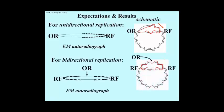For bidirectional replication, the lighter silver tracts would be flanked by darker ones, since the new and more radioactive DNA would have been synthesized in both directions after the DNA began unwinding at the origin of replication, shown in the middle of this image.